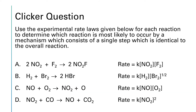Use the experimental rate laws given below for each reaction to determine which reaction is most likely to occur by a mechanism consisting of a single step identical to the overall reaction. We are proposing that each one of these reactions follows a mechanism identical to the overall reaction. If that's the case, the rate law should match the molecularity of the reaction. Pause this video, analyze the data, and see which of these is going to be the correct rate expression.